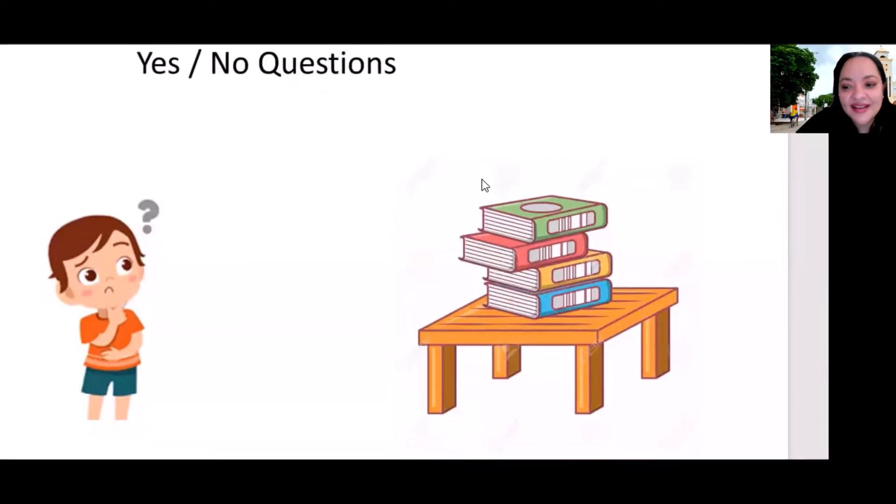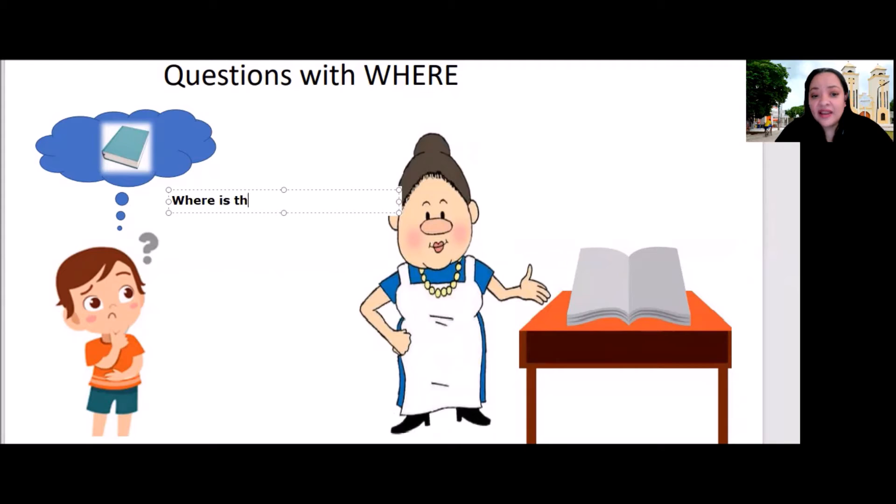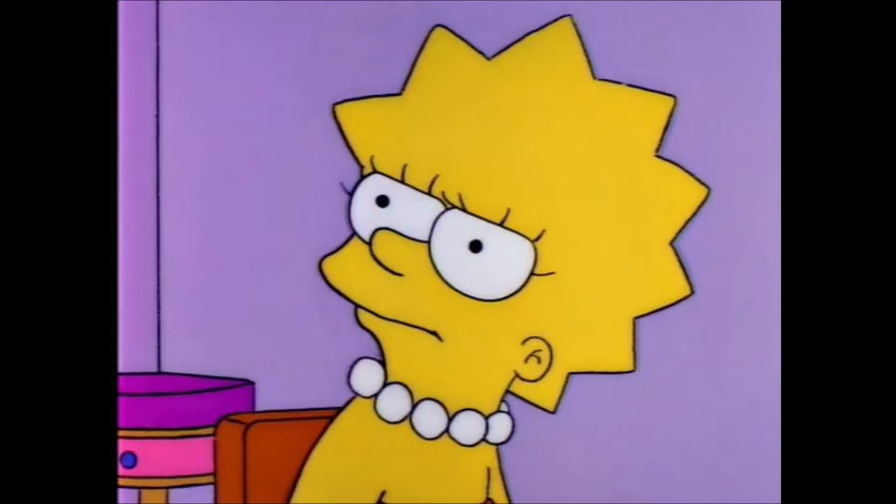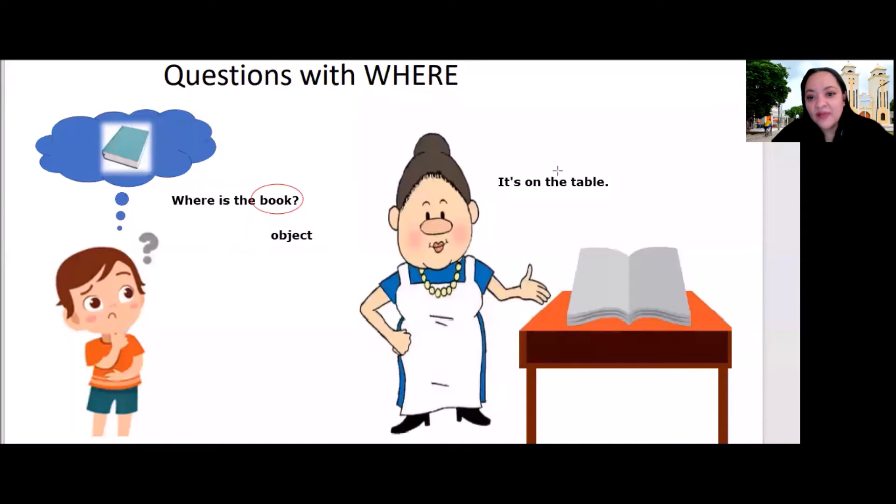Now, take a look at the situation. He's thinking about the book, but he's asking his mother. Where is the book? And the mother says, It's on the table. I say is because book is what? Is it a person or an object? It's an object, right? I knew it. So, we replace objects with it. So, the book, it is replacing the word book. So, where is the book? It's on the table. Very good.